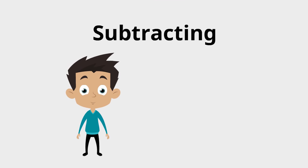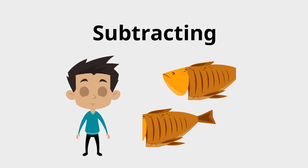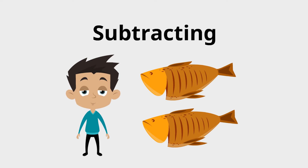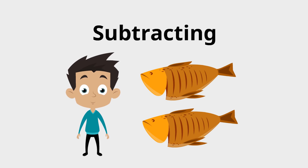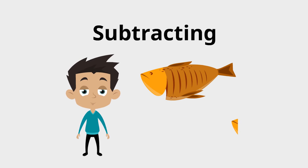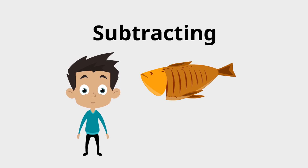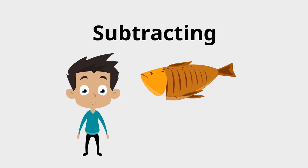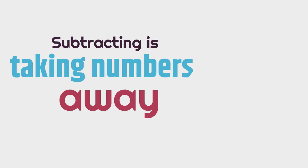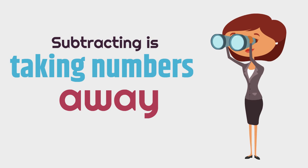Let's look at a quick example. This is little Billy, and little Billy has two fish. But his buddy doesn't have one, so he gives one of the fish away. He subtracts one of the fish. He had two and he took away one. He took away one of the fish, and now how many fish does he have after subtracting one? Yeah, he only has one fish left. He had two fish, subtracted one fish, took one fish away, and now he just has one. Subtracting is taking numbers away.